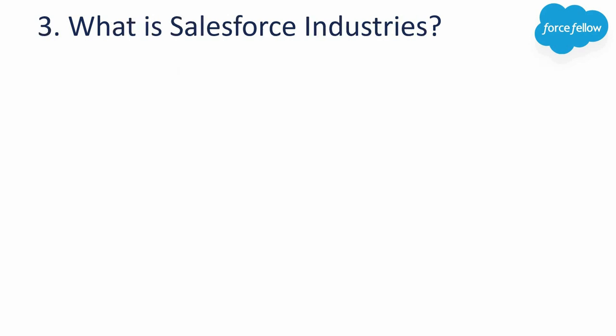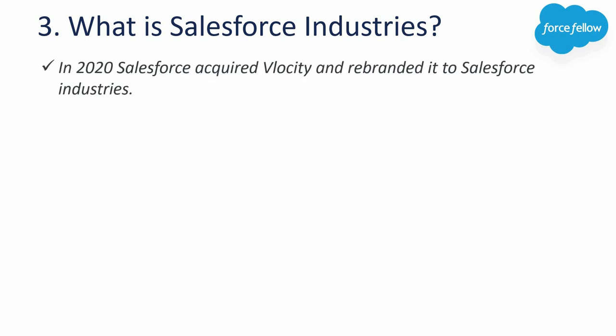The next question is: what is Salesforce Industries? Velocity was becoming popular and growing year by year with high profit, so in 2020 Salesforce acquired Velocity and rebranded it as Salesforce Industries. So we can say Velocity is now known as Salesforce Industries.